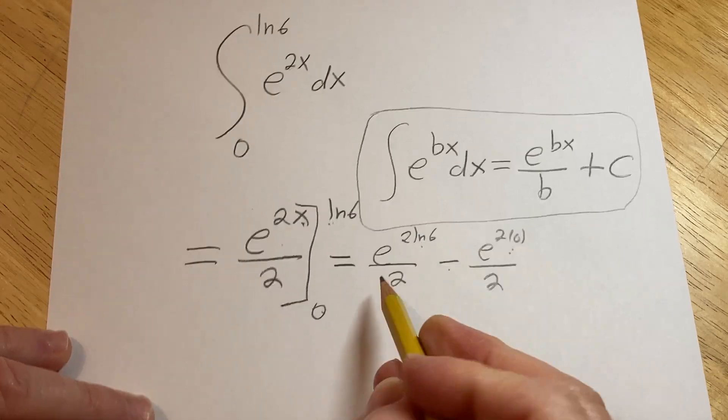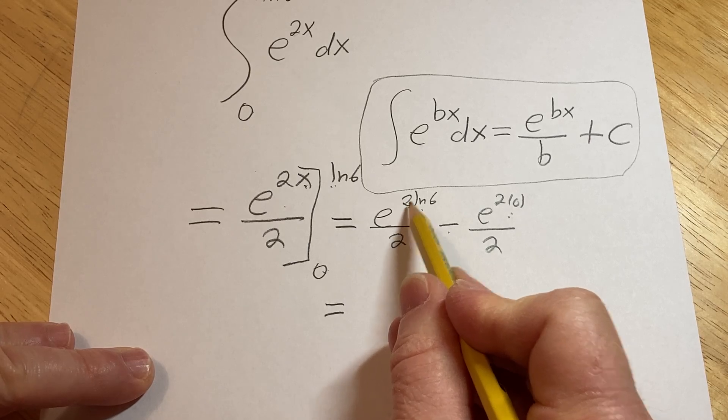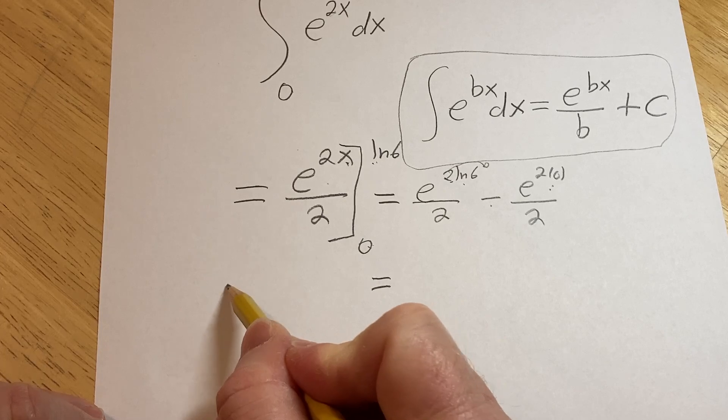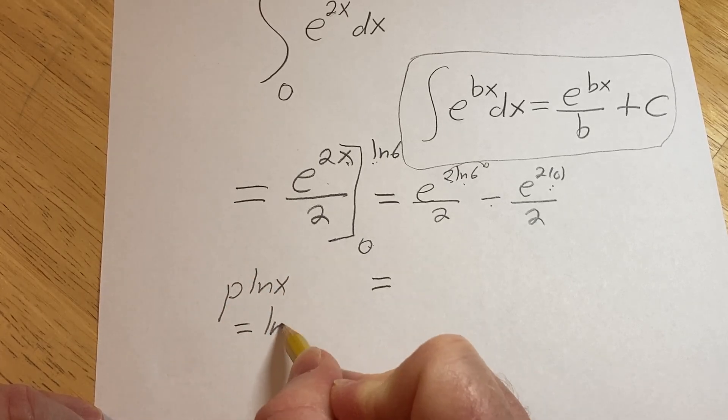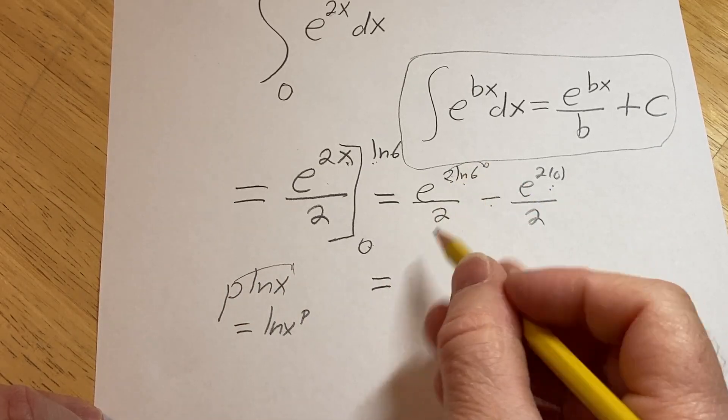So something interesting is going to happen here. Watch this. There's a rule that says if you have a number in front of a log, you can just bring it upstairs. It's called the power rule for logs. So if you have e to the p ln x, that's the same thing as e to the ln x to the p. So basically, you just bring it upstairs. You can do that with the 2 here.